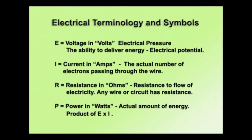The first thing we have to do is learn the different letters that represent the different values in electronics. The first one is E, and that represents voltage. Voltage is what we call electrical pressure – it's the ability to deliver energy. We call it electrical potential. It's like water pressure in a pipe.